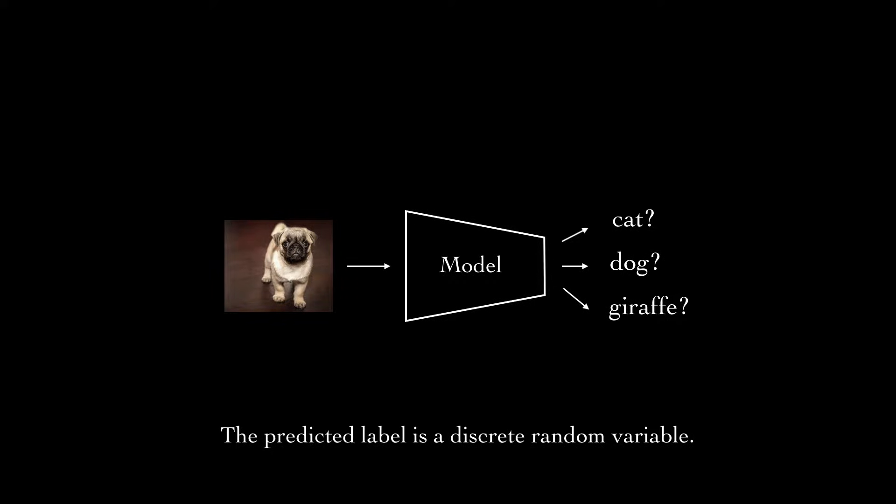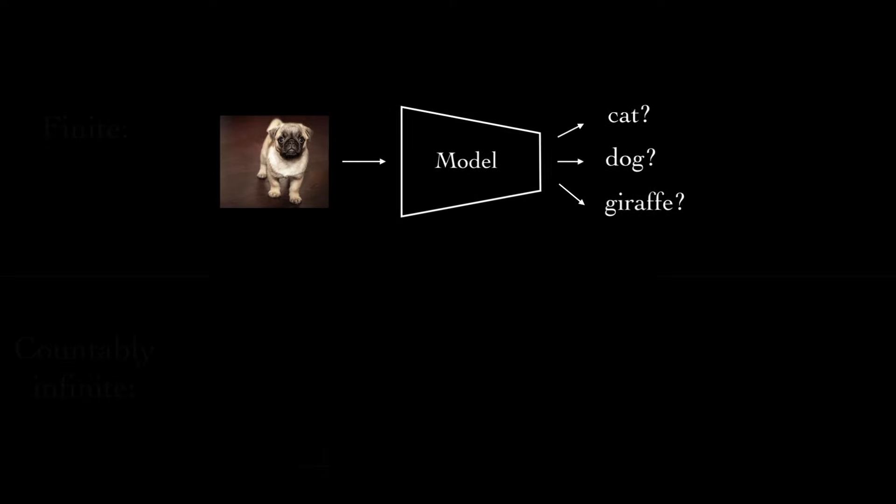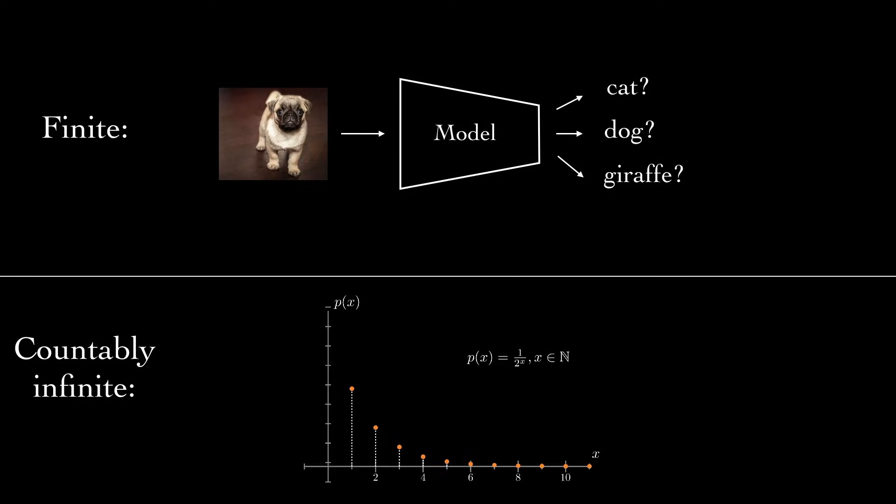If we're ever dealing with a finite set of possible values, say a categorical label from an animal classification model, then this is a discrete random variable. But discrete random variables can also apply to infinite target spaces as well, specifically countably infinite, like the natural numbers.